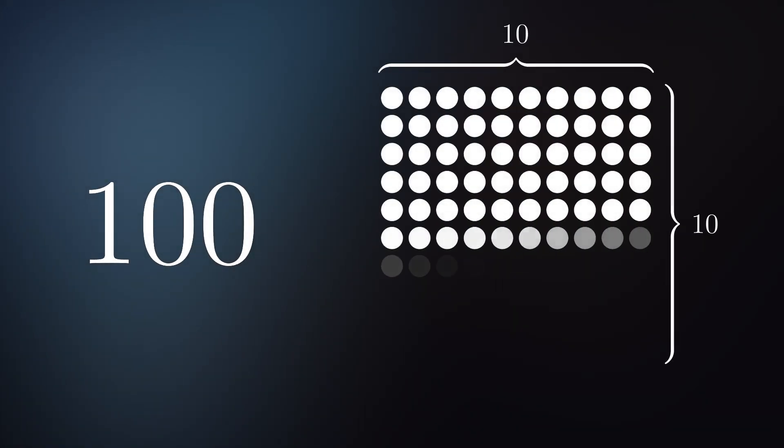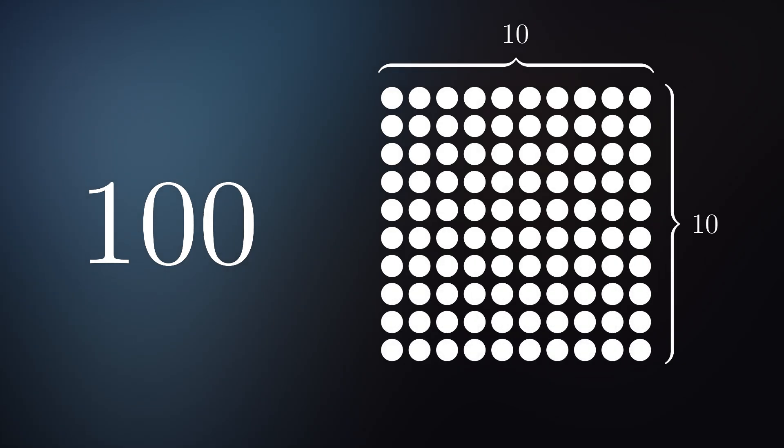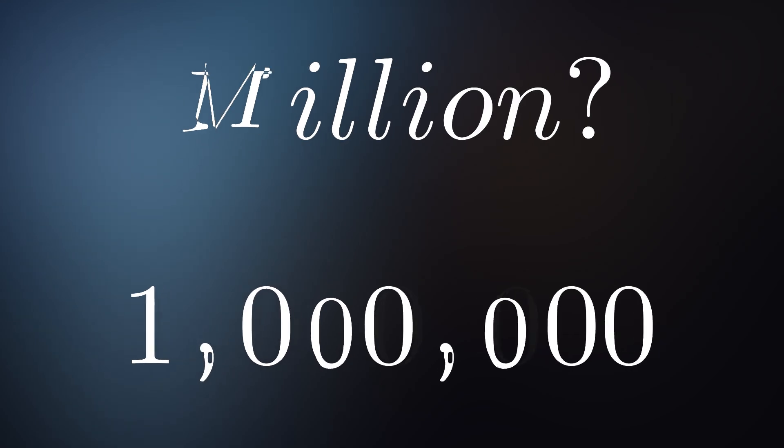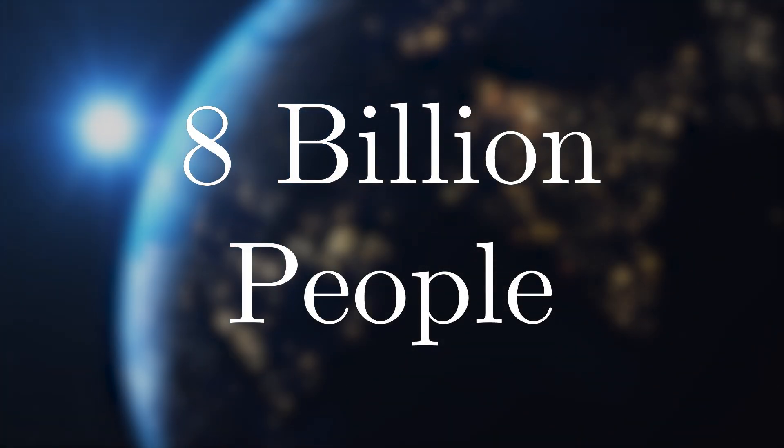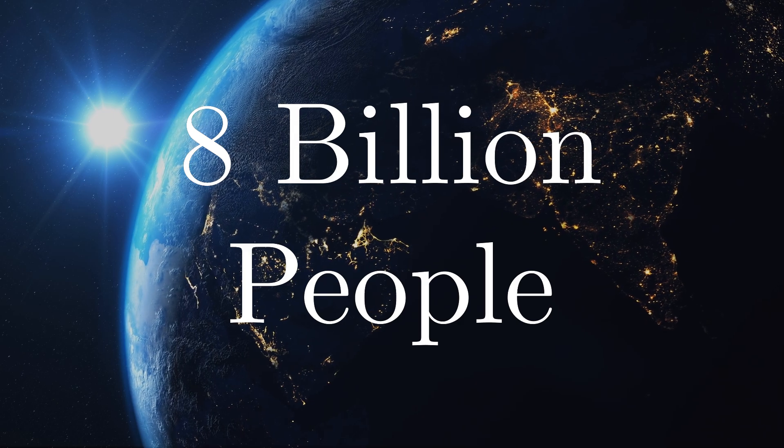One is a number representing an amount of things. You probably have a rough idea of what one thing looks like, and you probably have a rough idea of what a hundred things look like — it's just ten rows of ten columns after all. But what about a million? A billion? There are eight billion people on Earth, but can you picture all of them?